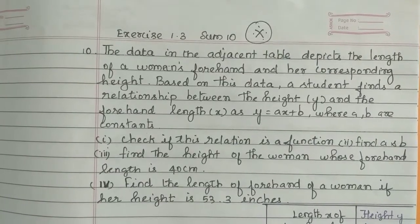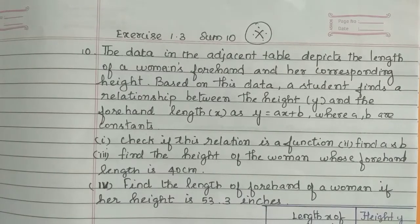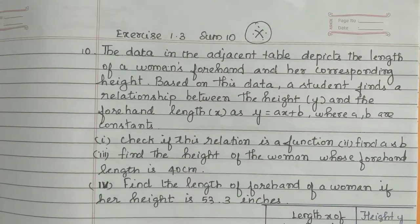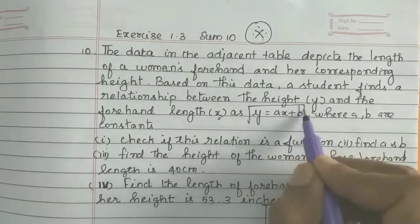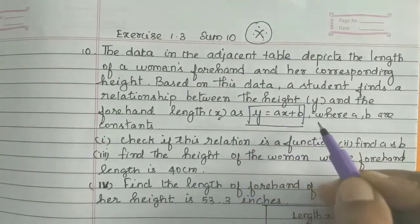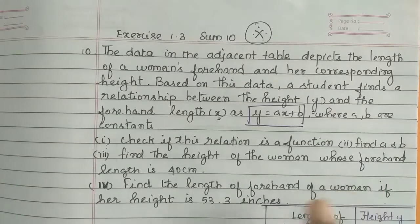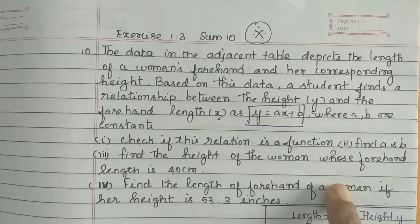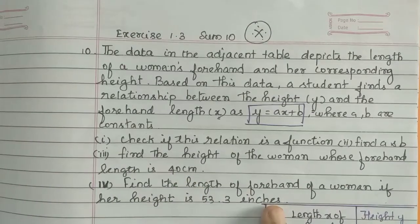Hi students. In exercise 1.3, the data in the adjacent table depicts the length of a woman's forehand and her corresponding height. Based on this data, a student finds a relationship between the height and the forehand length: height is y and forehand length is x, given as y = ax + b, where a and b are constants. Check if this relation is a function, find a and b, and find the height of the woman whose forehand length is 40 cm.